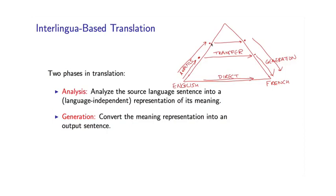The final type of translation system takes this idea to the extreme. This is what's called interlingua-based translation. In this case, there are just two phases. In the first step — the analysis step — we're going to analyze the source language sentence into what we hope is a language-independent representation of its meaning. We actually think of some point at the apex of this pyramid as being a language-independent representation of meaning.